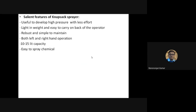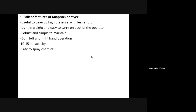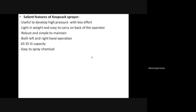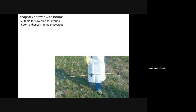Salient features of the knapsack sprayer: it is useful to develop high pressure with less effort; it is light in weight and easy to carry on the back of the operator; it is robust in design and simple to maintain; both left and right hand operations are available; capacity is 10 to 15 liters; and it is easy to spray chemicals.